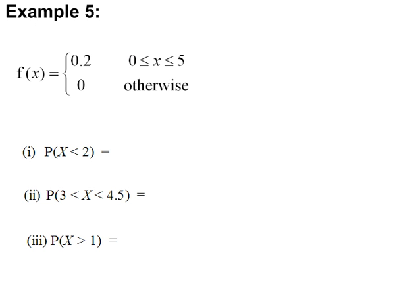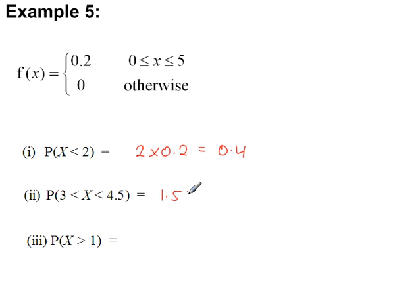Example 5: P(x < 2) — the width is between 0 and 2, which is 2, times the height, giving the probability. Between 3 and 4.5, the width is 1.5 times height 0.2, equal to 0.3. And P(x > 1): the width between 1 and 5 is 4, times 0.2.